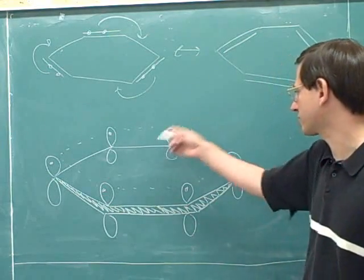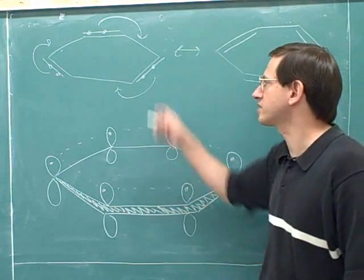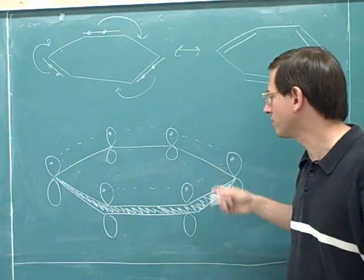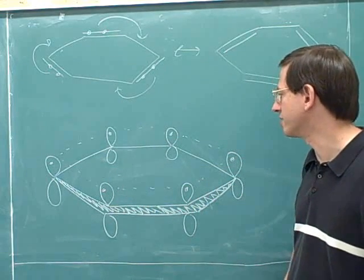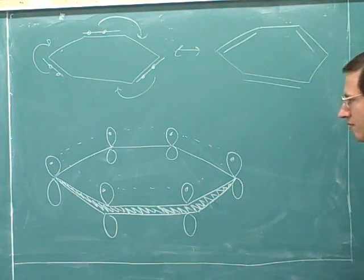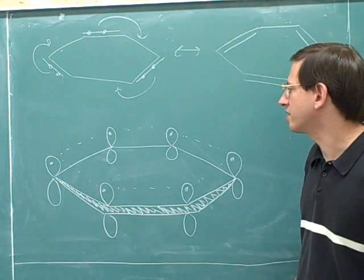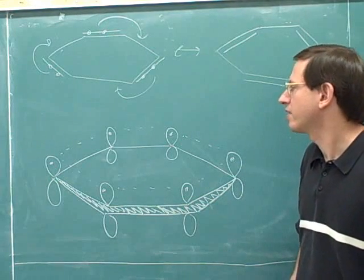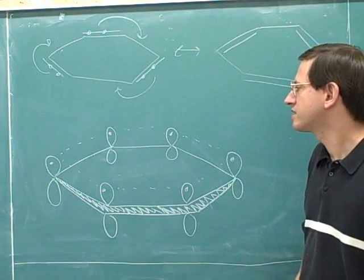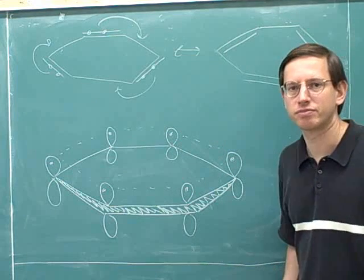Here we have a molecule that is completely conjugated, because not only do we have three or more overlapping p orbitals, but we have side-to-side overlapping p orbitals at every atom in the ring.